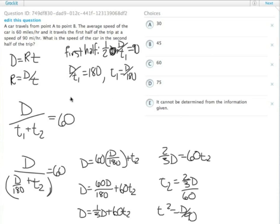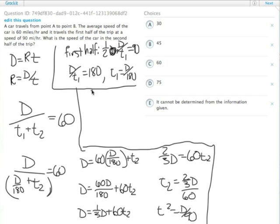From there, we can figure out the second half of the trip. I should probably wall off some of this stuff so it doesn't get confusing visually. So the second half—we don't actually know what the speed of the car is. We're solving for this R, similar to this first half equation: one half of D over T2.